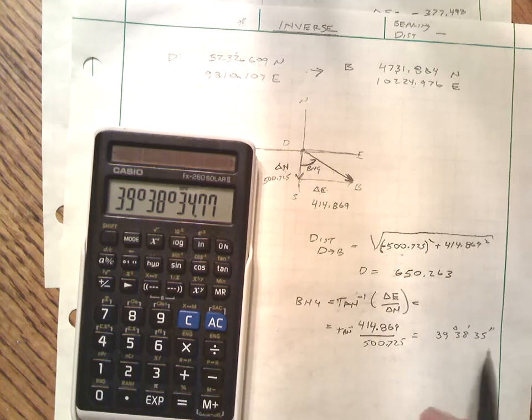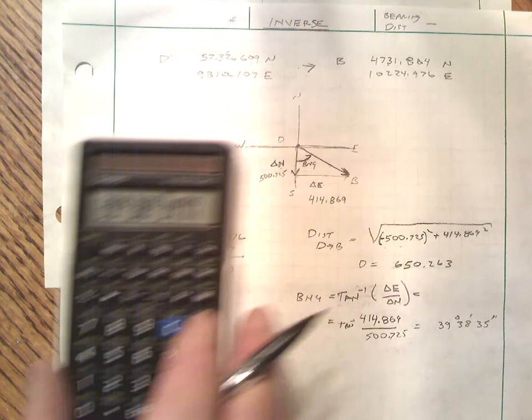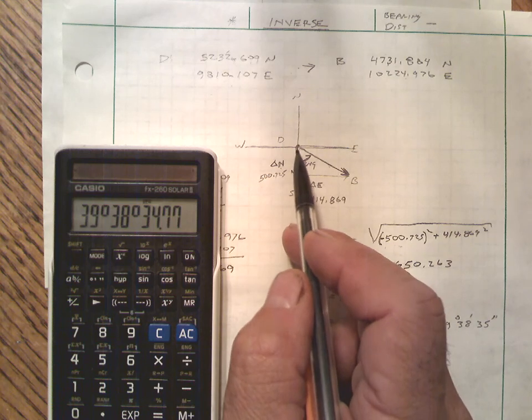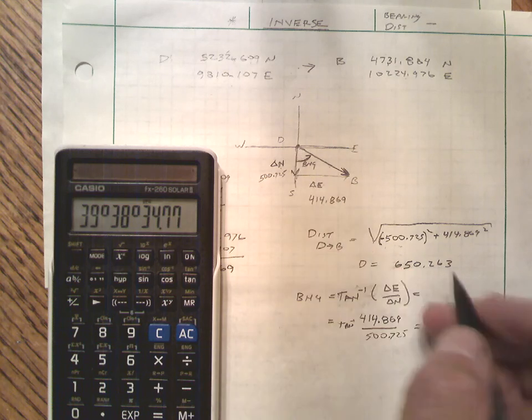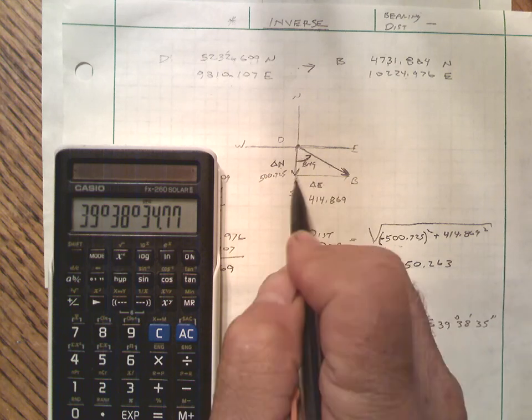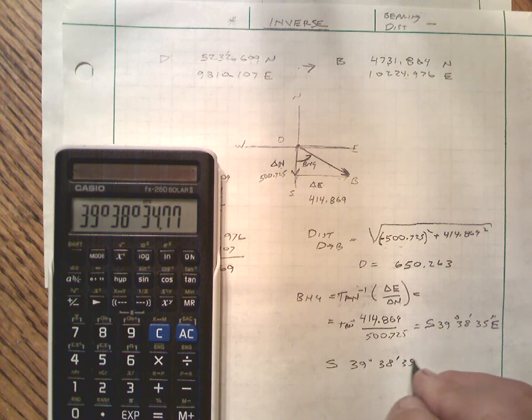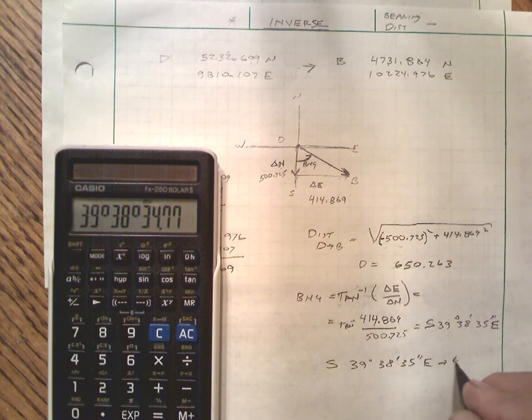39 degrees 38 minutes 35 seconds. And we kind of have to manually insert the letters. So to go from D to B, we're going south and east. So the answer is south 39 degrees 38 minutes 35 seconds east, 650.263 feet.